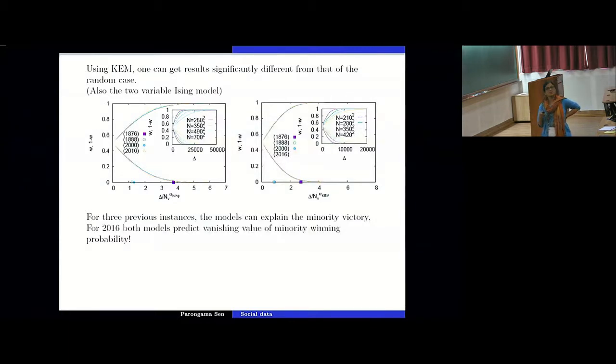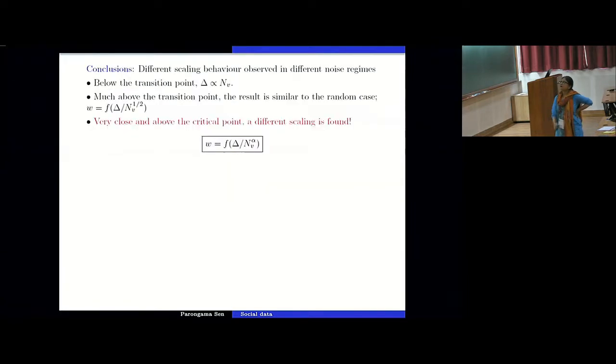And now you see where are those four points. Now you can see that those four points lie here. So the 2016 data is here where w is almost equal to zero. But the other three data can be explained using this data, because you have a finite probability that this value of delta and this value of n_nu can actually support the thing that popular candidate can ultimately lose using this particular model. So as I told you that 2016 was a surprise.